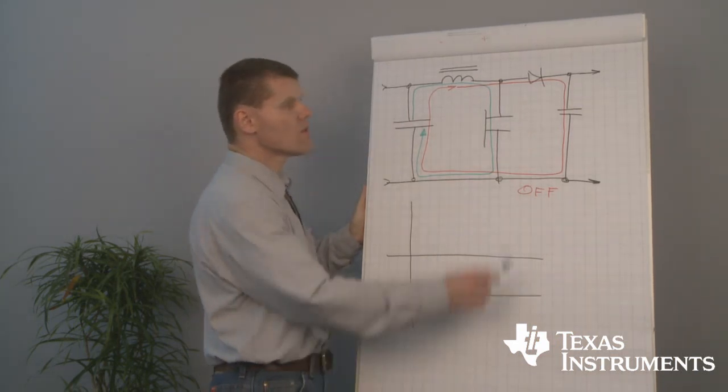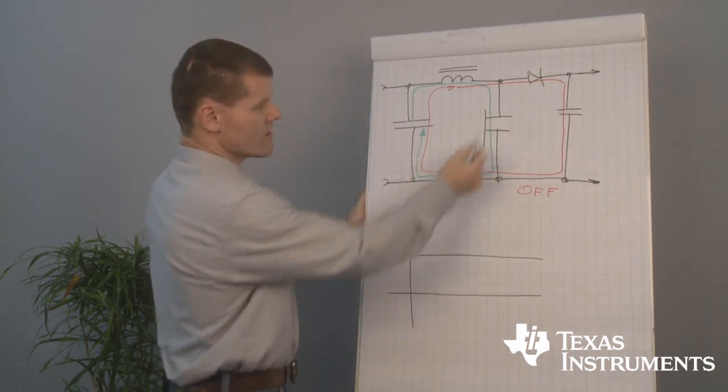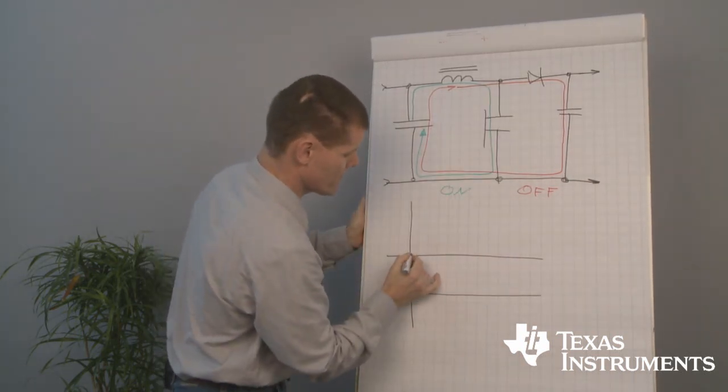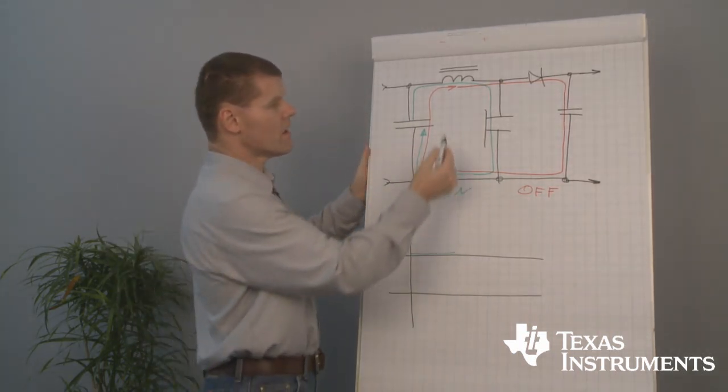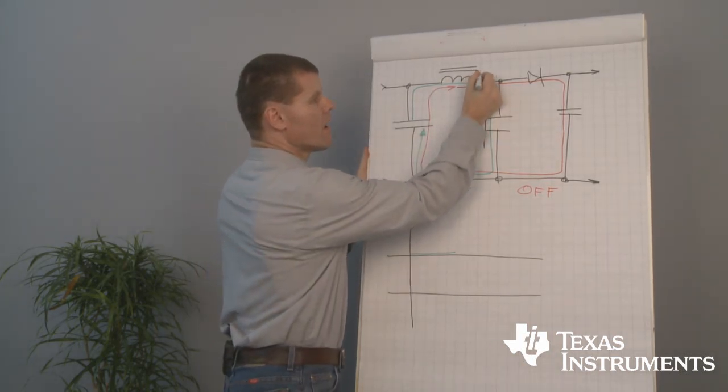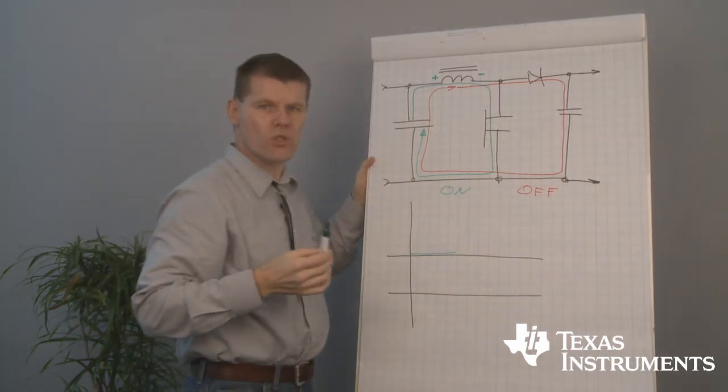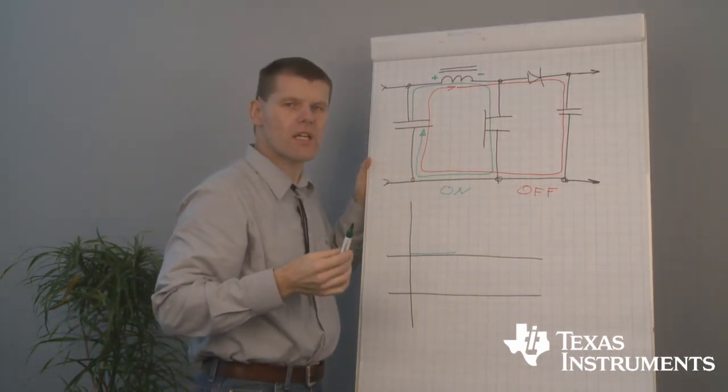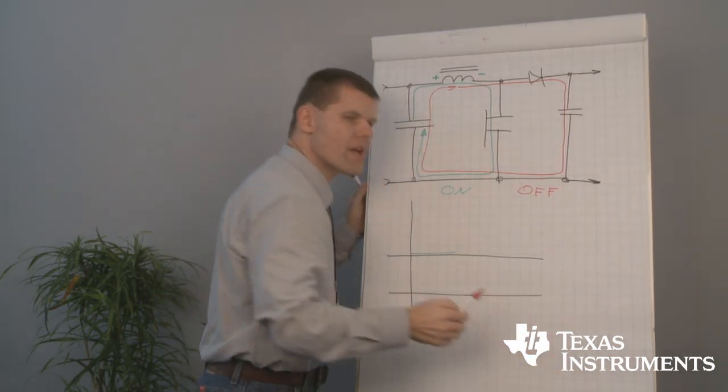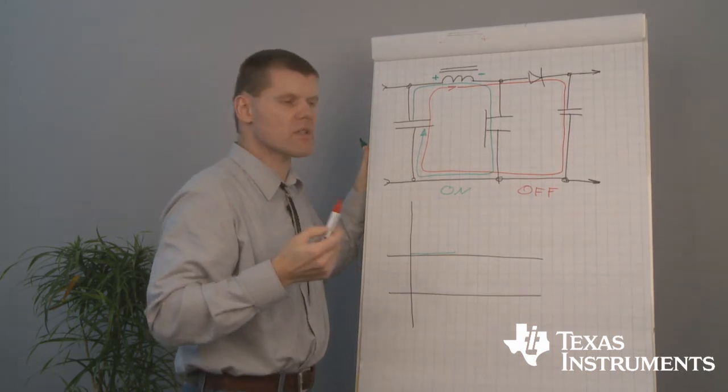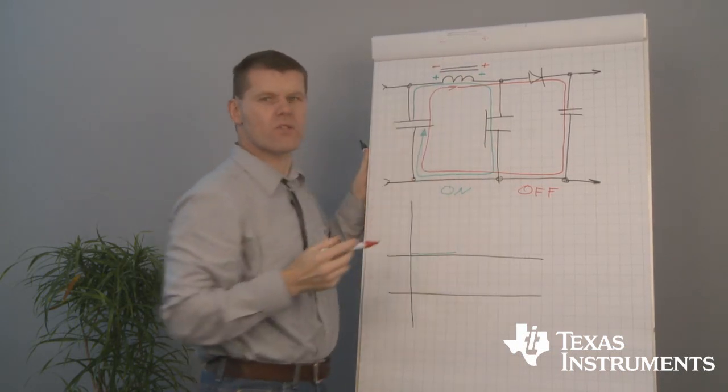Of course, when the switch is closed during our ON state, the voltage at the switch node is zero, causing a voltage across the inductor. By opening the switch, the voltage inside the inductor turns. And that's the basic understanding of how the boost converter works. The voltage inside the inductor has to turn.